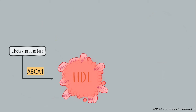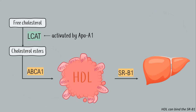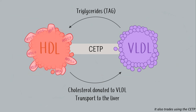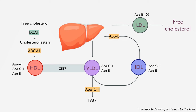ABCA1 can take cholesterol in, but first the LCAT must make esters of them. HDL can bind the SRB1 — the esters dropped off, and more still to come. It also trades using the CETP, linking lipoproteins and can take triglycerides. In turn it gives them some cholesterol back. Transport it away and back to the liver.